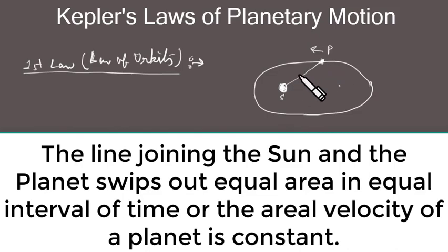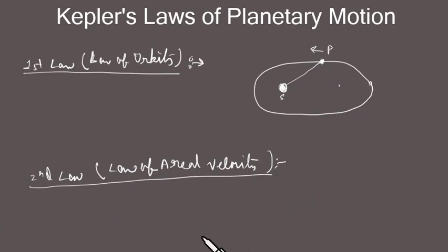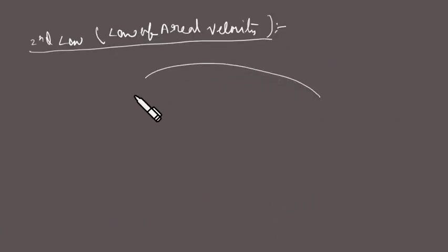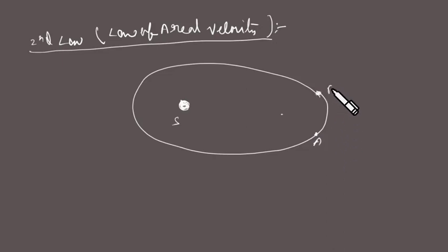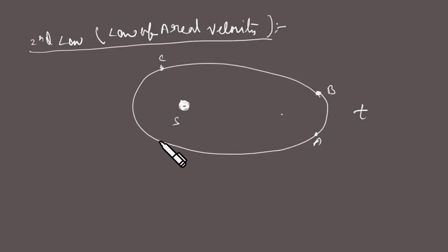To understand this, imagine the line joining the Sun and the planet as SP. Consider the elliptical path of the planet, with the Sun at one focus. The planet moves from position A to B in time t, and then from position C to D in the same time interval t.